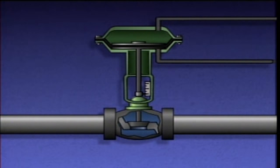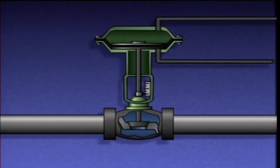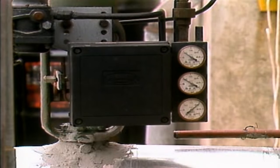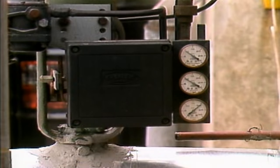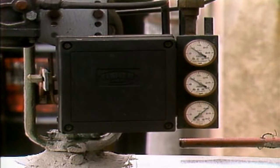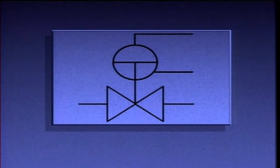Controlling the applied pressures enables the actuator to position the valve anywhere within the limits of travel. In most applications, accurate positioning is achieved by using a device such as a positioner to add air to one side of the diaphragm and bleed it off the other side.